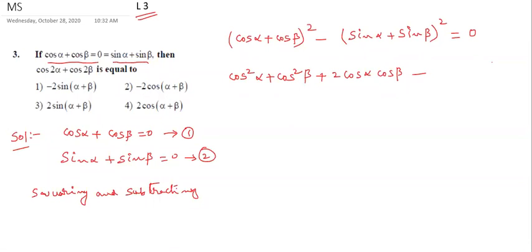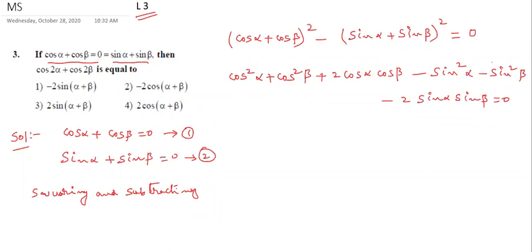Minus the second term: minus (sin α + sin β)², which gives minus sin²α minus sin²β minus 2 sin α sin β. That is equal to zero.